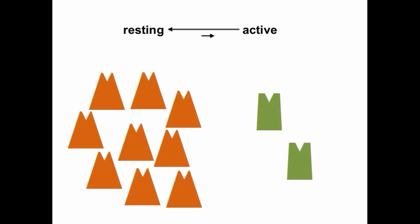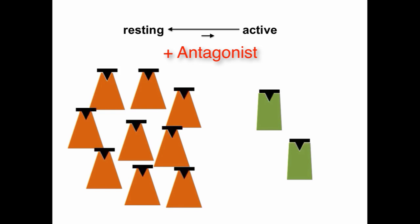In contrast, if we look at an antagonist, we have our resting and inactive receptors, and when we add an antagonist, nothing happens to the receptor — the equilibrium does not change. But pharmacologically, these receptors are now blind. They are not able to bind to the endogenous agonist, and so they don't respond.